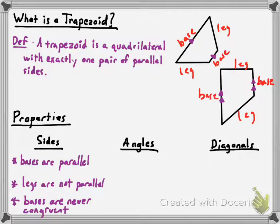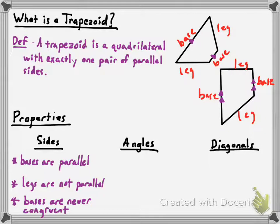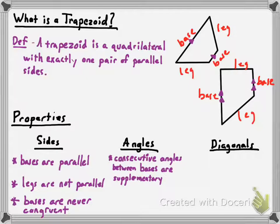As far as the angles, there is one special property. We do have parallel lines, and we have legs that can be called transversals of those parallel lines. Anytime you've got parallel lines cut by transversals, the consecutive interior angles formed are supplementary. So the consecutive angles between the bases are supplementary.